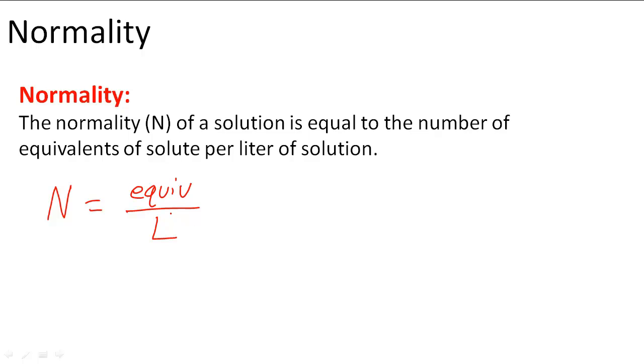This is important when we talk about acids and bases. An equivalent of an acid is the amount of that acid that can furnish one mole of H plus ion. So an equivalent of an acid would be the one that can produce one mole of H plus ion.